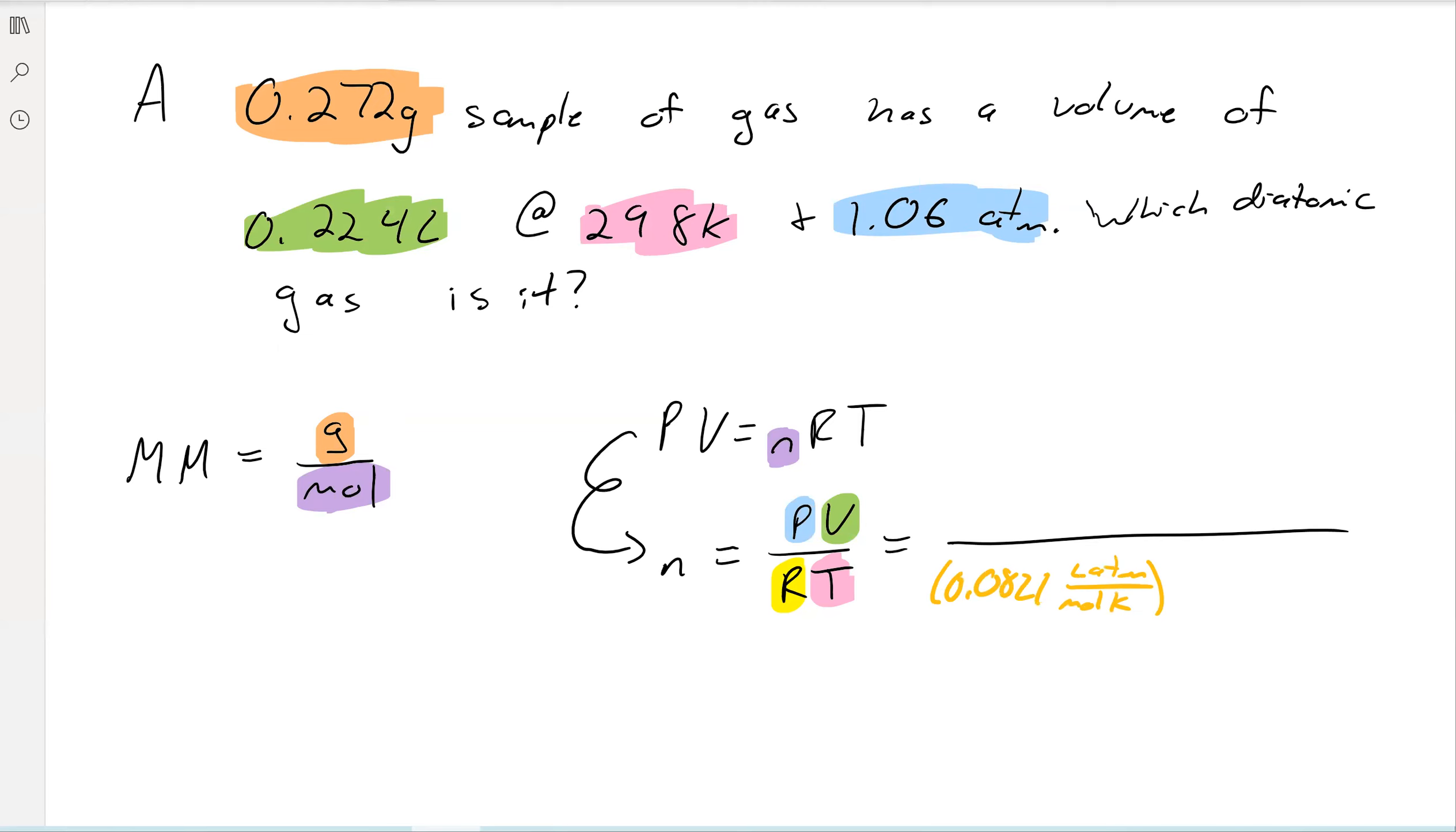Our volume was, or our pressure was 1.06 atmospheres. Our volume was 0.224 liters. And then our temperature was 298 Kelvin. And then we're going to cancel some out. So atmospheres with atmospheres, liters with liters, Kelvin with Kelvin. And then we're left with moles, which is exactly what we want. So we have 9.70 times 10 to the negative 3 moles of our ideal gas.